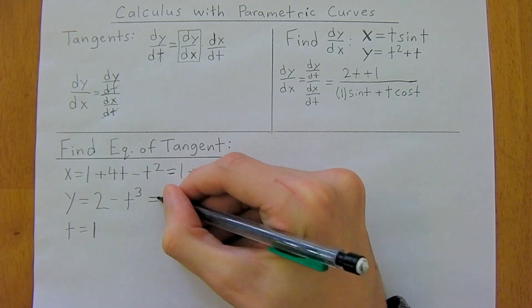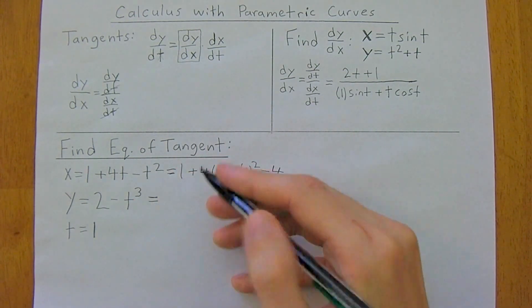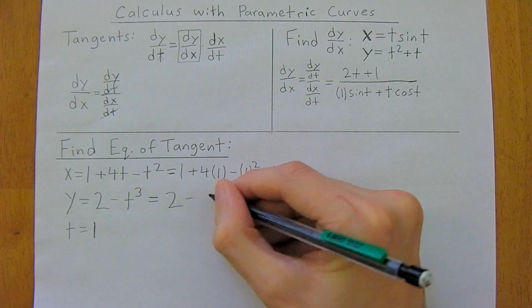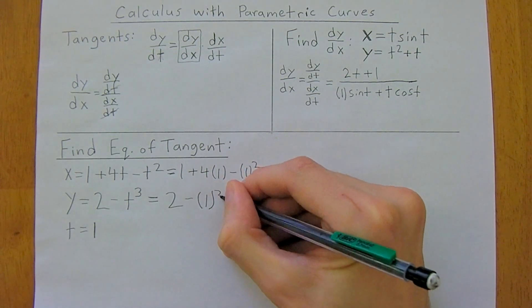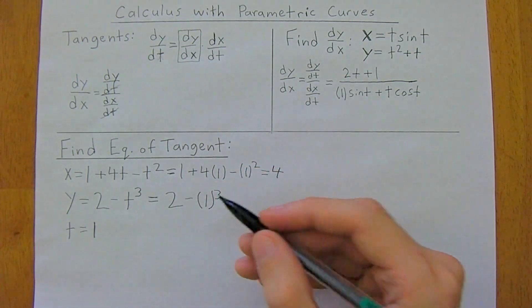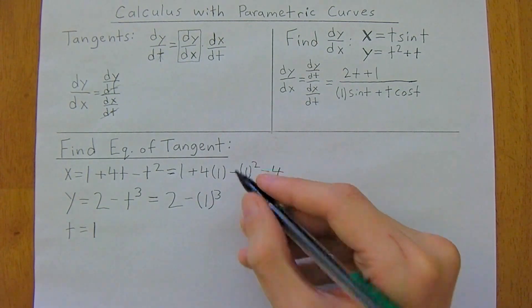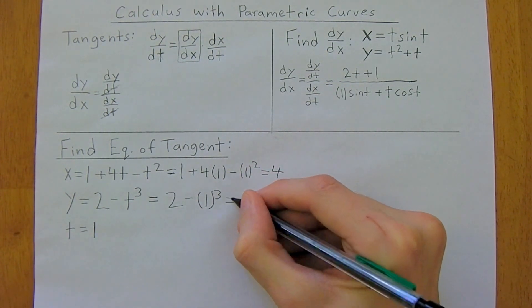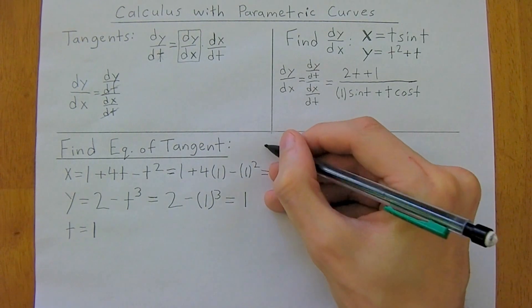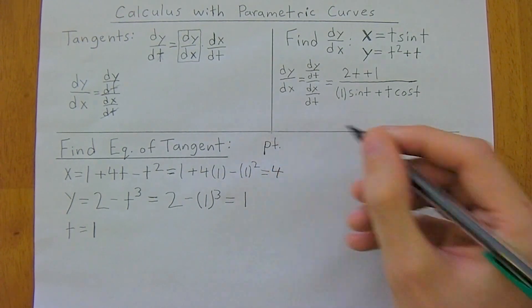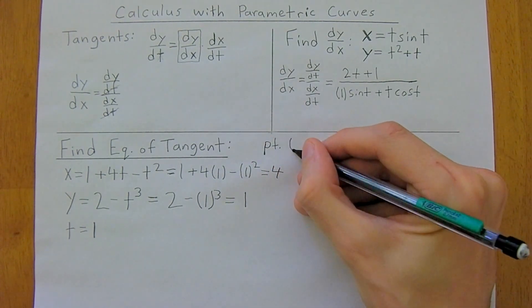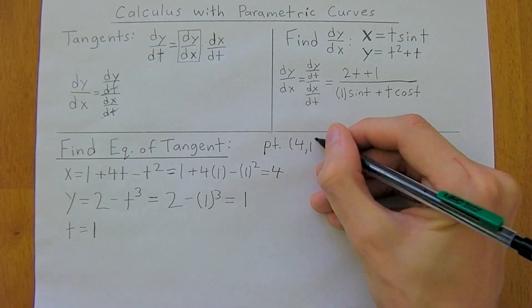Then our y coordinate. Well, let's plug in 1 for t again. So 2 minus 1 cubed. And 1 to the anything is just 1. So this is just 2 minus 1, which is 1. So now we have our point. So our point on the line is going to be (4, 1). So we're halfway there now.